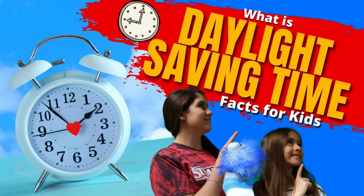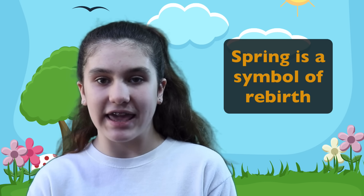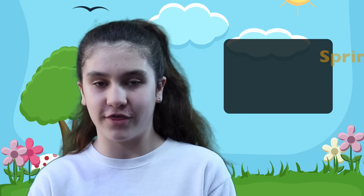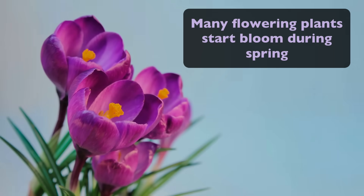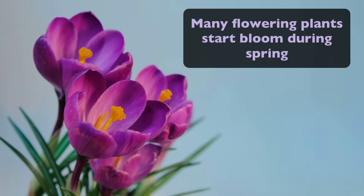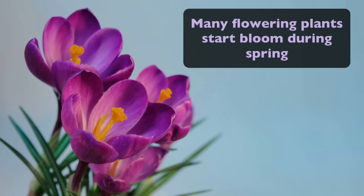Something else that happens around springtime is daylight saving time, or spring forward, which happens in March just before spring. We actually did a video on daylight saving time — we'll link it in the description below. Spring is the season between winter and summer and is a symbol of rebirth. Many flowering plants start to bloom during spring, and they usually start when snow may still be on the ground and continue growing all the way into the beginning of summer.